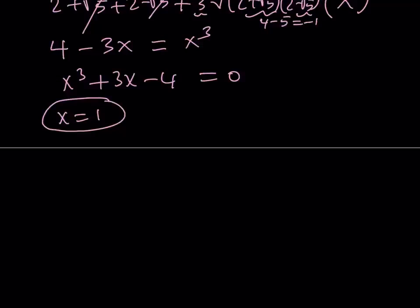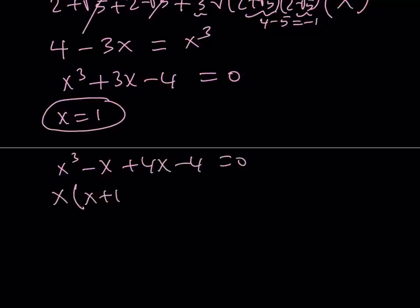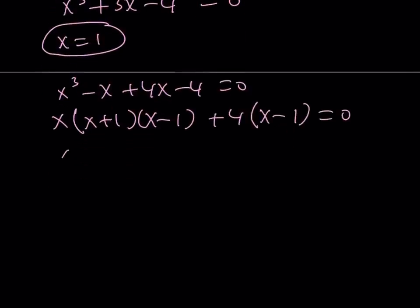After figuring out that x equals 1, we can either use long division or we can just factor it. I'm going to write it as x cubed minus x plus 4x minus 4 equals 0. From here, I can just take out an x, and then I'll get x plus 1, x minus 1 from difference of two squares, and then plus 4 times the quantity x minus 1. So now x minus 1 is a common factor.